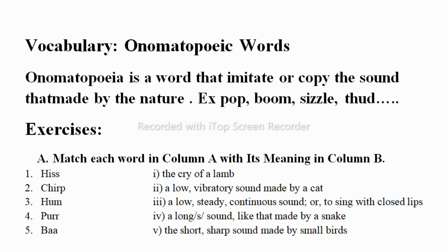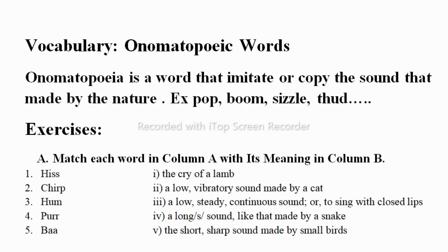In the last video I have explained onomatopoeia words. It's very simple — onomatopoeia words are nothing but words which are made by imitation of the natural sound. They name the object or a thing based on its sound. For example, pop, boom, and sizzling sounds. You can watch that video; the link is provided in the description box of this video.